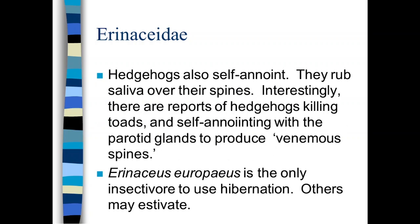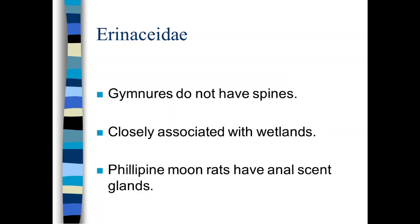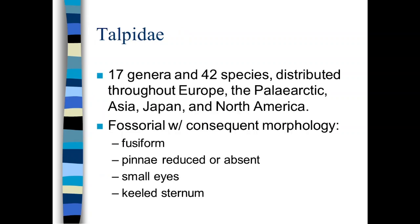We talked a little bit about their defensive postures. We talked about self-anointing. And we also talked about the fact that the European hedgehog is the only insectivore capable of hibernation. Others can go into estivation or torpor, but that's different from hibernation. Remember, hibernation is when you allow your body temperature to drop all the way to four degrees centigrade and then bring it up from there. We talked a little bit about gymnures and the fact that they don't have spines, the fact that they are associated with wetlands. It's an interesting group and I would invite you to read more about gymnures.